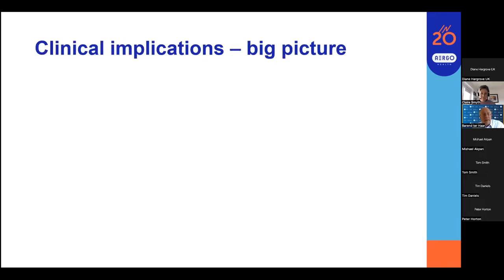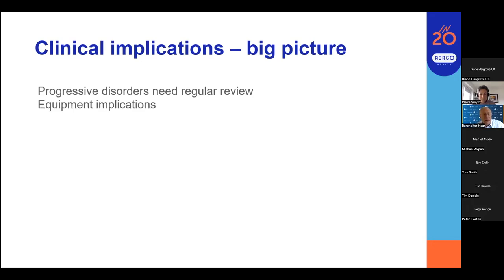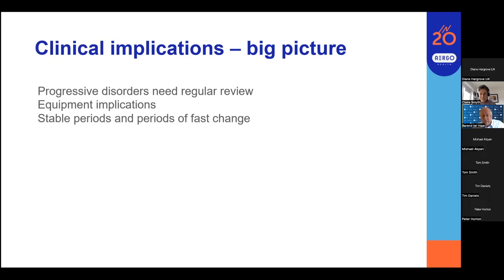The clinical implications of the big picture are that progressive disorders need regular review — not just of the individual's needs, but what equipment can help facilitate everyday life and what changes to equipment need to be offered. Many disorders have stable periods and then periods of fast change, so it's not easy to say we'll bring someone in every six months. Sometimes six months, not much might have changed; in other cases, six weeks might have seen significant change. It needs a lot of flexibility. And for individuals, some days are better than others.